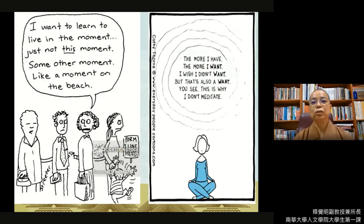就是永远都是活在另外一个moment而不是当下的moment。所以这里又有另外一个图案：The more I have，我拥有的更多，The more I want，那我就会需求更多。然后I wish I don't want，所以我期待我不想要要什么。But that's also a want，连这样的一个念头、不想要东西的念头也是一种I want，也是一种我想要什么。You see this is why I don't meditate，所以就是这样子，有一个讽刺啦，所以我不想要打坐。那这个就是有关mindfulness的一个反向的思考。